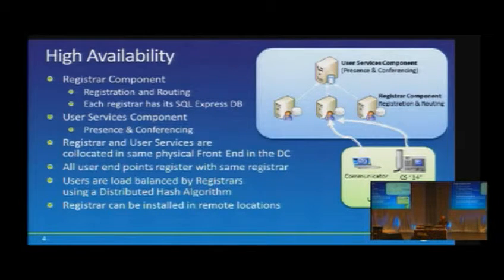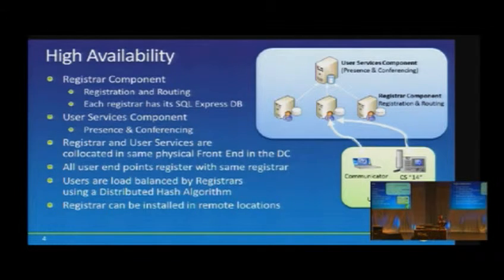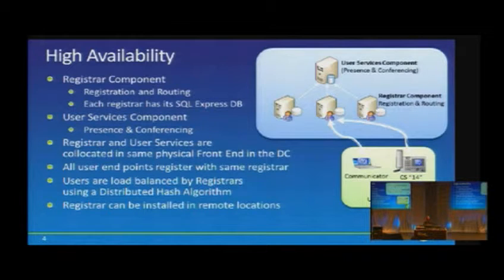The first main point behind most of the resiliency options is the concept of the client being able to split its registration between the user services component and the registrar component. In previous versions of OCS, these were the same — a client would both register and get its user services from the same endpoint or pool. The client submitting its SIP registration request goes to the registrar component, while things like IM and presence updates come from the user services component.